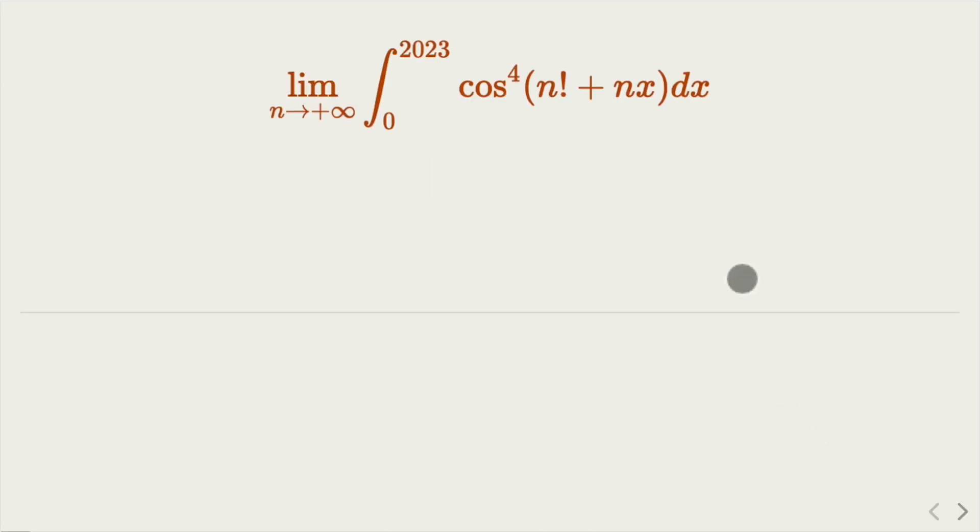The first thing you want to notice is that as n goes bigger and bigger, the value of n factorial would be dominating. However, for nx, we know that for the cosine, it will oscillate between negative 1 and 1. That's two observations.